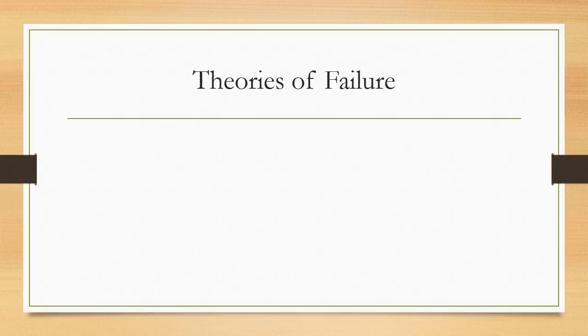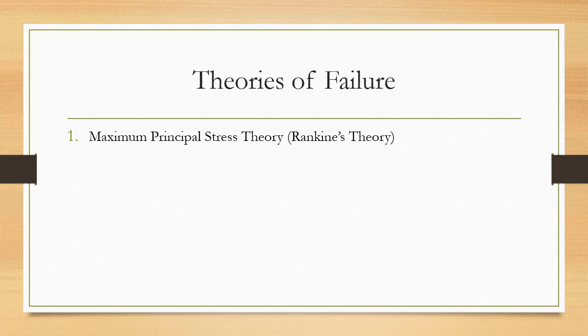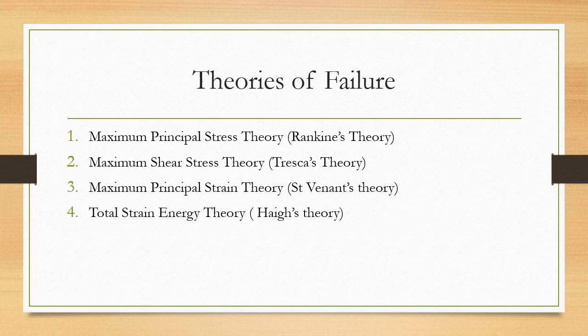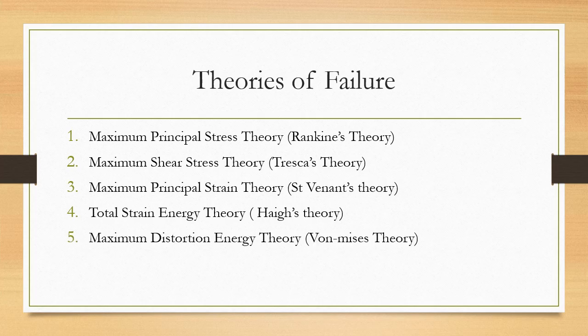All the theories of failure, I'll go one by one. The first is the maximum principal stress theory given by Rankine. The second is the maximum shear stress theory given by Tresca. The third is the principal strain theory by Saint-Venant. The fourth is the strain energy theory given by Haigh. The fifth is the distortion energy theory given by Von Mises.